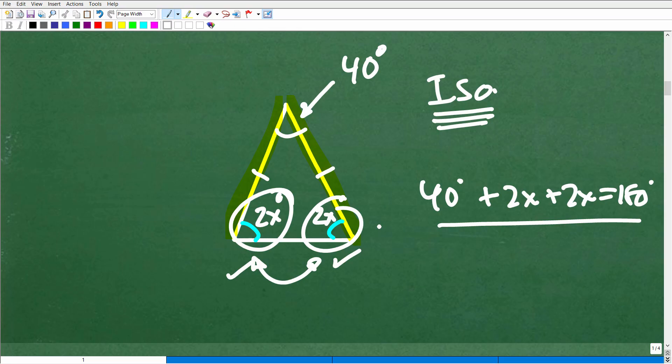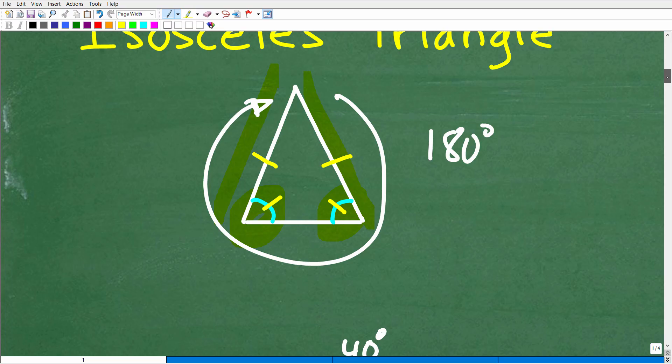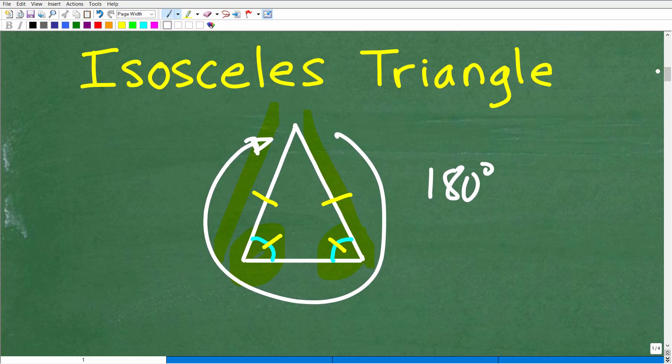So triangle problems are pretty much, you know, universal in terms of how to solve them. Not all of them, but a lot of them, but a lot of it comes down to knowing the specific characteristics of what type of triangle you're dealing with. So in this case, we took a close look at the isosceles triangle. But remember, there's other types of triangle, equilateral, right triangle, scalene, acute, and obtuse. So you want to make sure you know this stuff as well.